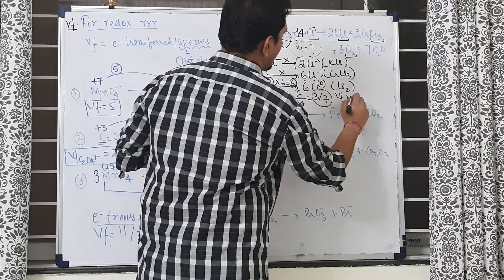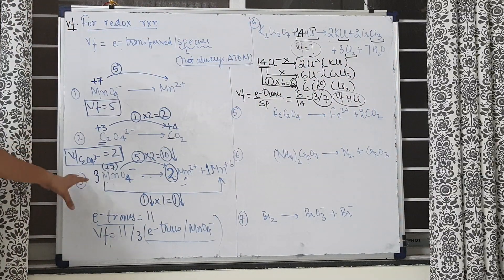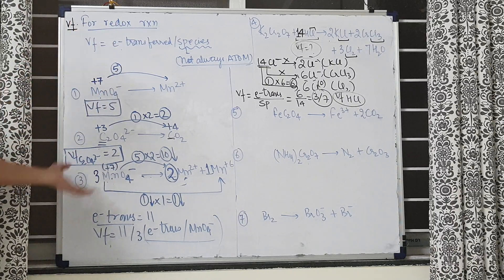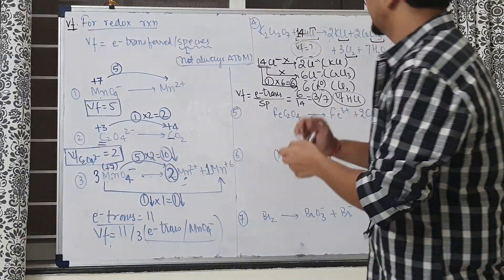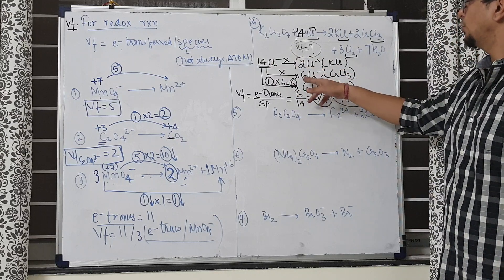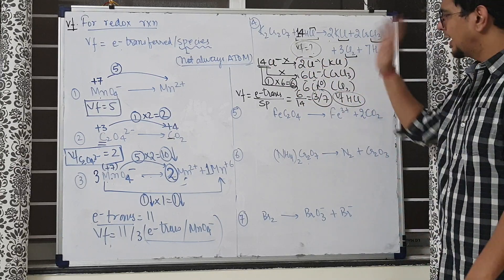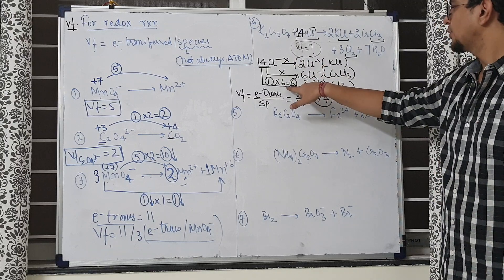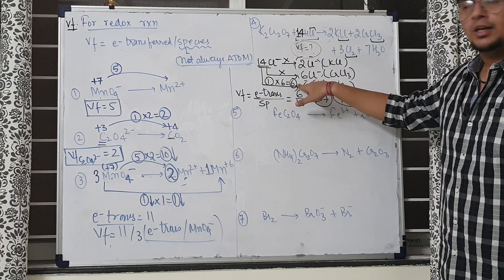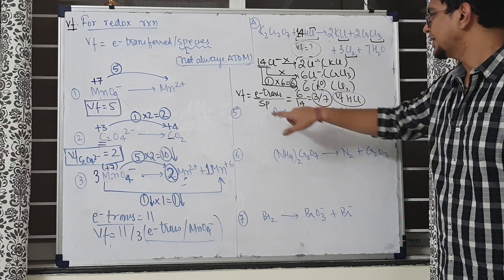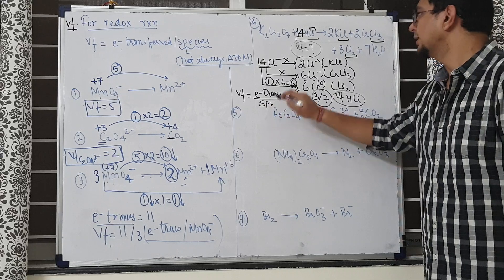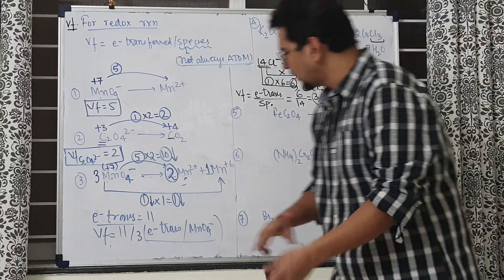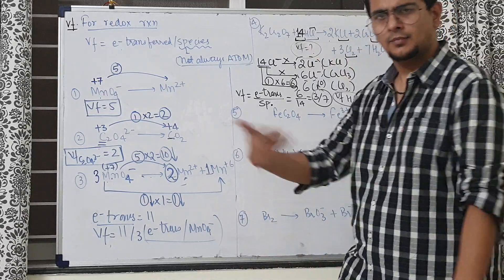So the valency factor of HCl in this reaction is 3/7. In example 3 similarly, total electron transfer was 11, total species were 3, so valency factor = 11/3.